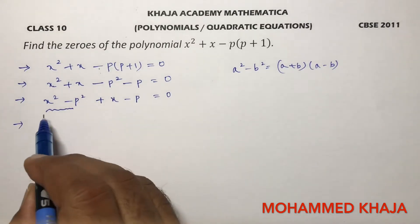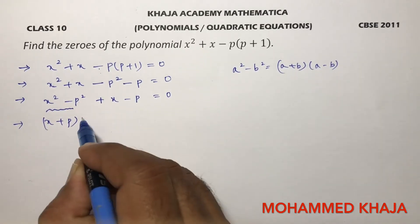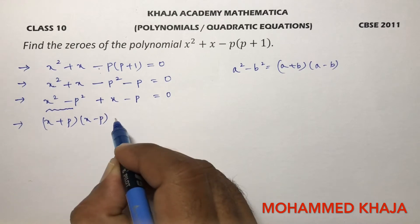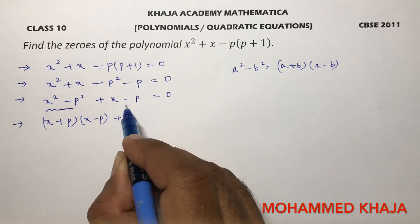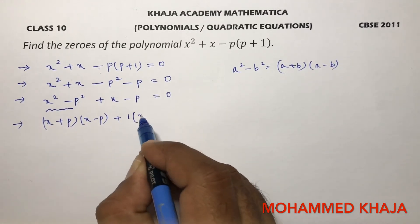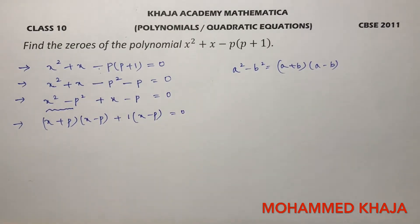So this x squared minus p squared I can write as x plus p times x minus p, plus in these two terms if we take one common, x minus p equals 0.